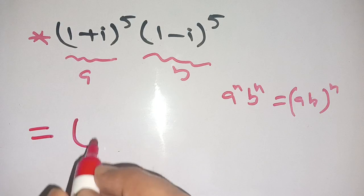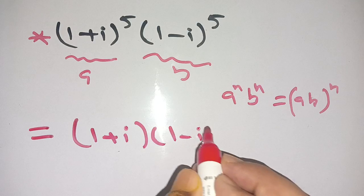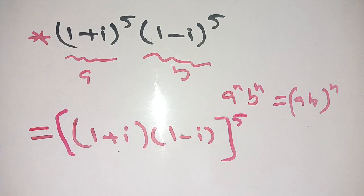We get [(1+i)(1-i)]^5. Now from here, it is considered that (a+b)(a-b) is equal to a^2 - b^2.